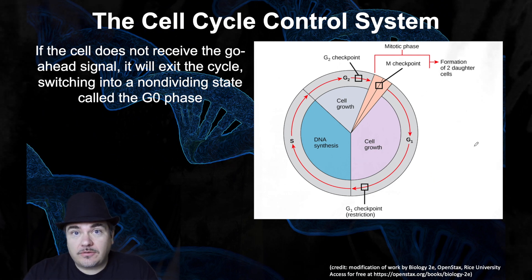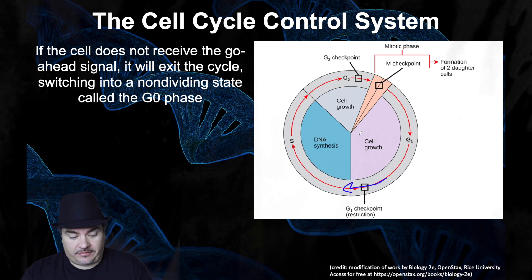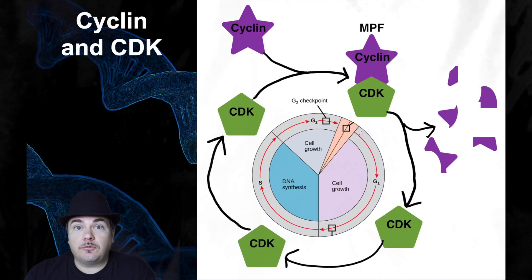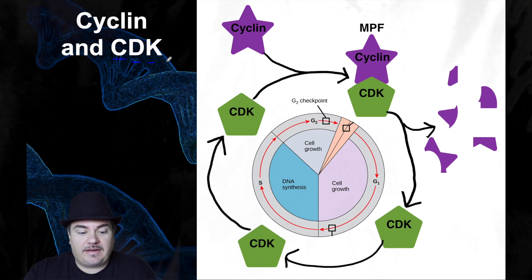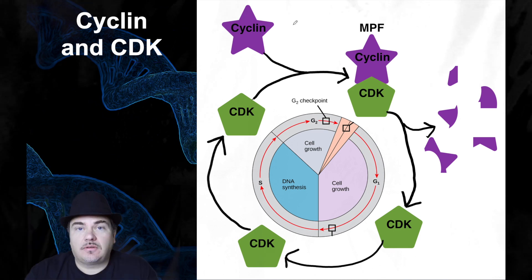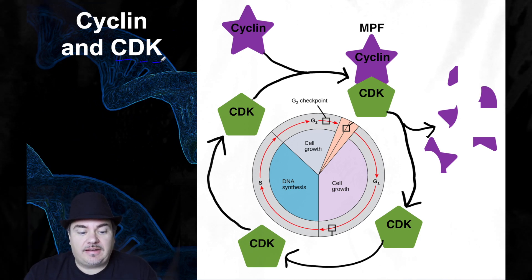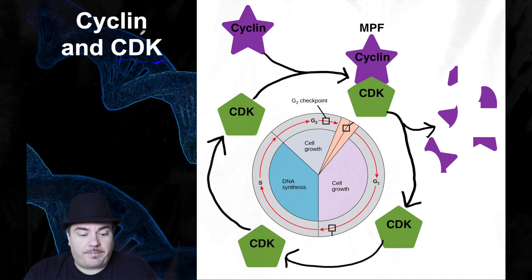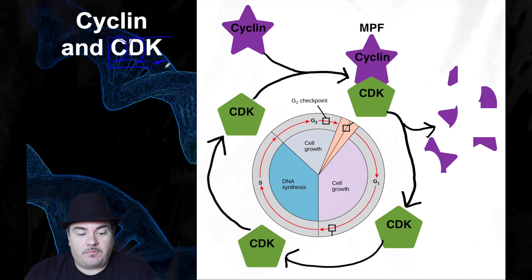What allows a cell to actually pass a checkpoint and proceed to the next part of the cell cycle? It turns out there are two proteins that work together: cyclin and cyclin-dependent kinase, or CDK for short. CDK is a kinase — an enzyme that adds a phosphate to something — and it depends on cyclin, meaning CDK will not work without cyclin.